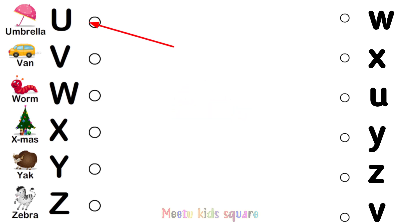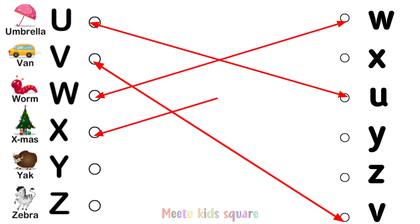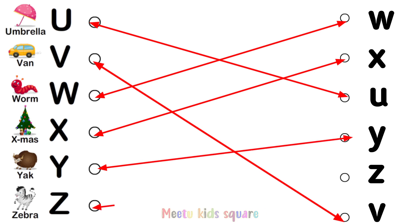U for umbrella, V for van, W for worm, X for x mastery, Y for yak, Z for zebra.